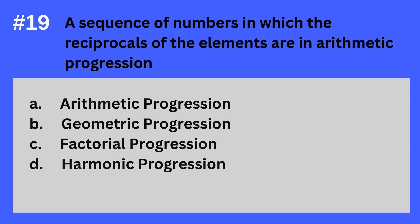Question 19. A sequence of numbers in which the reciprocals of the elements are in arithmetic progression. A. Arithmetic progression. B. Geometric progression. C. Factorial progression. D. Harmonic progression. The answer? It's D. Harmonic progression. A sequence of numbers in which the reciprocals of the elements are in arithmetic progression — Harmonic progression.